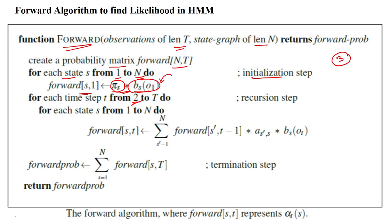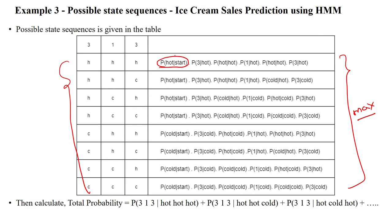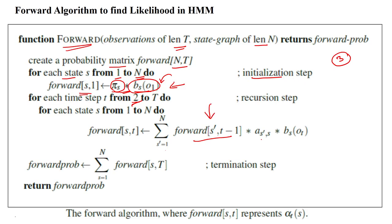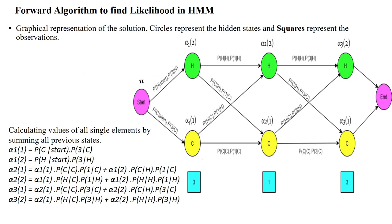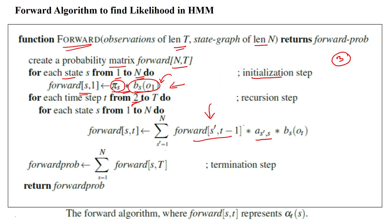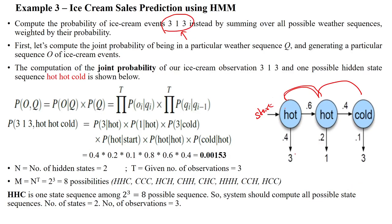We have to calculate the value at this point — the value we got from forward of s, 1. That is the value of the person moving to the hot state from the initial state. After reaching that, he will take some transition value. Based upon the observation, the transition probability is applied, and after reaching the next state, you will get the emission probability. There is a transition probability available, and once you reach the state using the transition probability, you will get some observation.